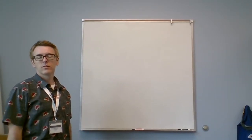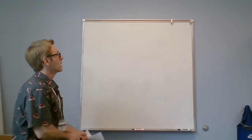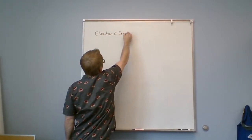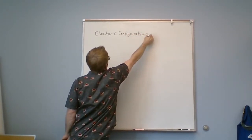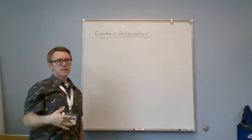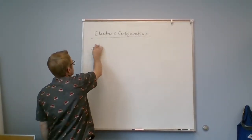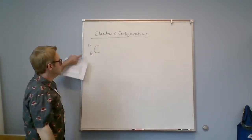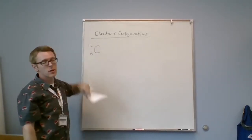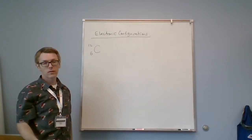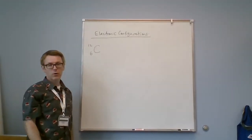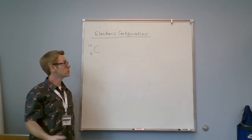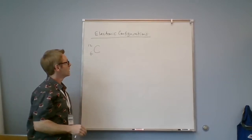This short video will begin to introduce electronic configurations. Electronic configurations are basically a way to construct an atom. Looking at carbon-12, any element has two numbers — the larger number is the atomic mass and the smaller number is the atomic number. We know from counting protons, neutrons, and electrons that the atomic number, the smaller number, is the number of electrons if it's a neutral atom. So carbon has six electrons.